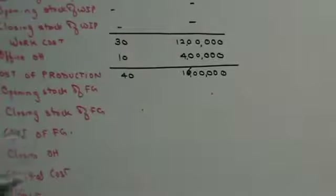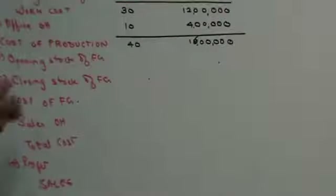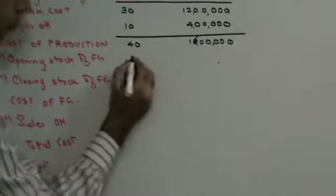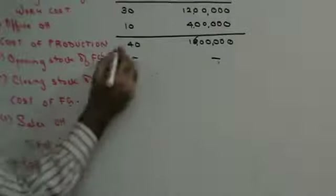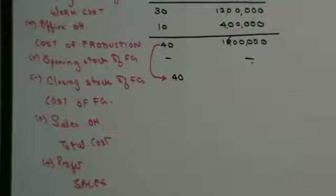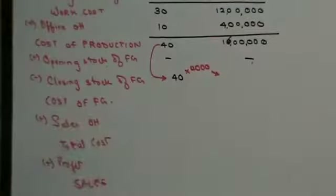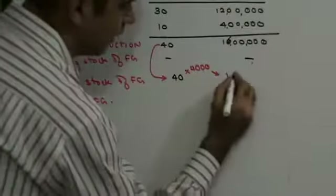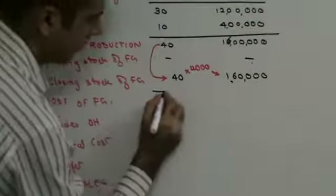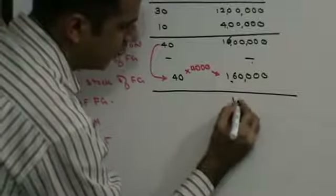Now comes the interesting part. Units produced is 40,000 and stock of units at the end is 4,000. When there is closing stock with no opening stock, bring the CPU of cost of production (40) down as it is, and multiply by the number of units unsold: 40 multiplied by 4,000 is 1,60,000. So 16 lakhs minus 1,60,000 gives 14,40,000.